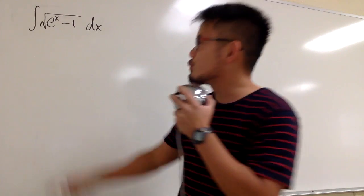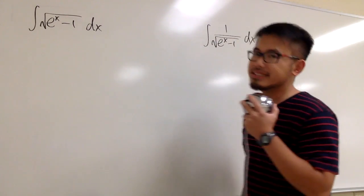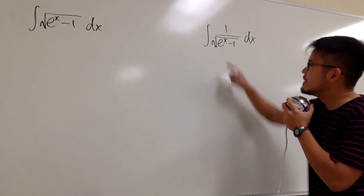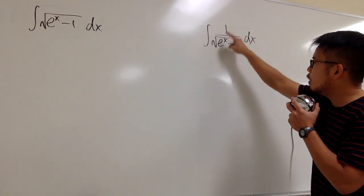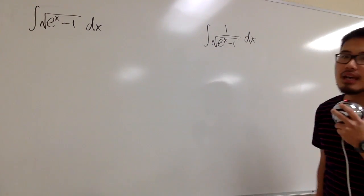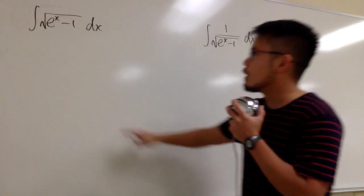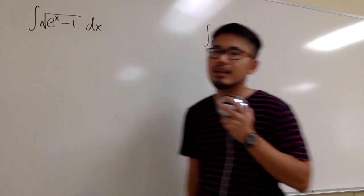This is the integral battle. The first one is the integral of the square root of e to the x minus 1. The second one is the integral of 1 over the square root of e to the x minus 1. As you can see, this is just the reciprocal of that.